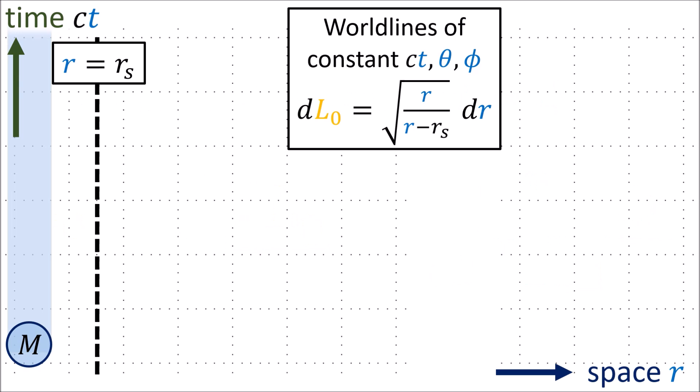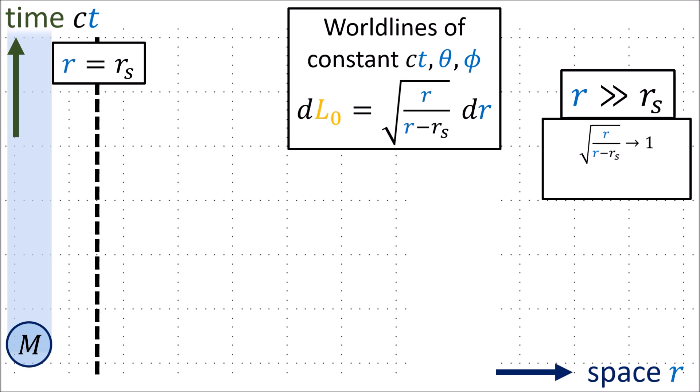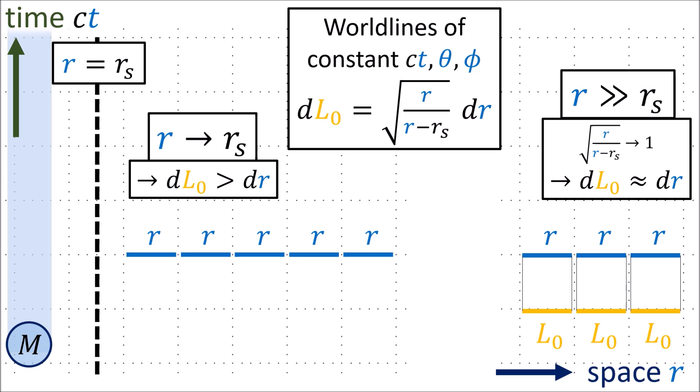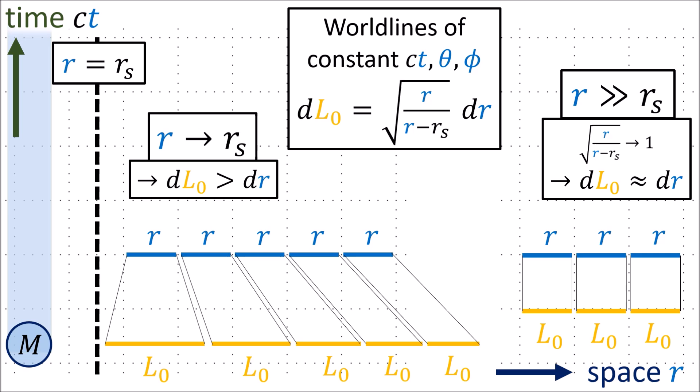In flat Minkowski spacetime, the proper length between two points along an R coordinate line equals exactly the change in the R coordinate. But in Schwarzschild spacetime, there's a more complicated relationship involving an integral. A small proper length dL0 is related to a small change dr by a square root factor. When R is much larger than the Schwarzschild radius, this conversion factor goes to 1, so far from the mass the R coordinate difference equals proper length. But as we get closer to the Schwarzschild radius, this conversion factor gets larger, meaning one unit of R corresponds to more than one unit of proper length — the region close to the Schwarzschild radius contains much more physical space than it appears on our spacetime diagram.